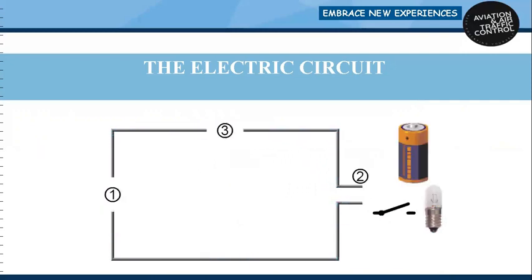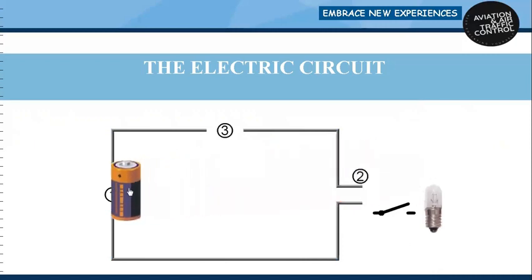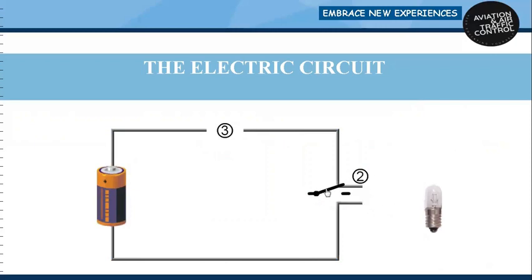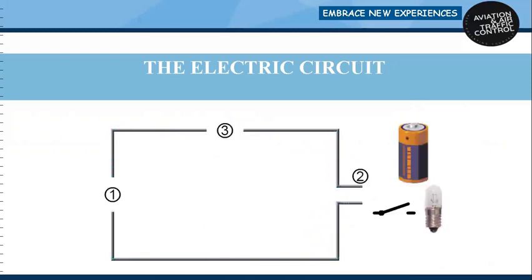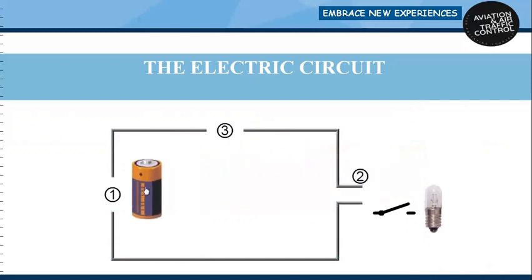The functions of these parts are: the cell is used as a source to supply electric current. The load is a resistor, basically a light bulb, which turns on when the circuit is turned on. The conductor — copper wires are used as conductors; one end of the wire carries current from the power source to the load and the other end returns it. The switch is a part of the circuit that controls the supply of current.